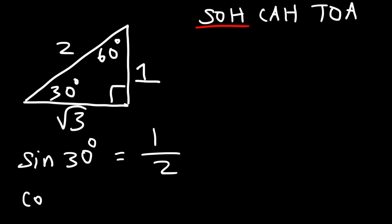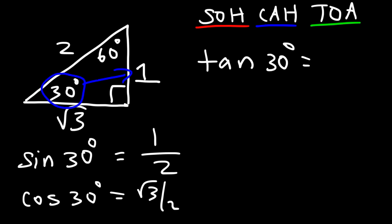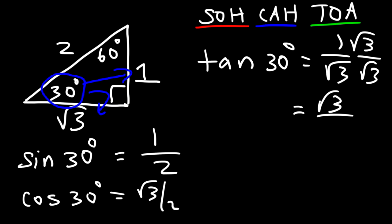For cosine 30, we use CAH: cosine equals adjacent over hypotenuse. The adjacent side is the square root of 3 and the hypotenuse is 2, so cosine 30 is root 3 over 2. For tangent 30, using TOA, tangent equals opposite over adjacent: 1 over root 3. Rationalizing by multiplying by root 3 over root 3 gives root 3 over 3, since the square root of 9 is 3.